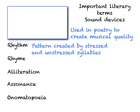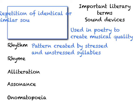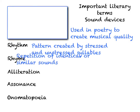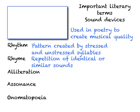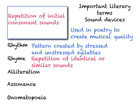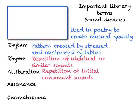Next we have rhyme — the repetition of identical or similar sounds. Very important. We have alliteration — the repetition of initial consonant sounds. And we have assonance — the repetition of vowel sounds in nearby words.